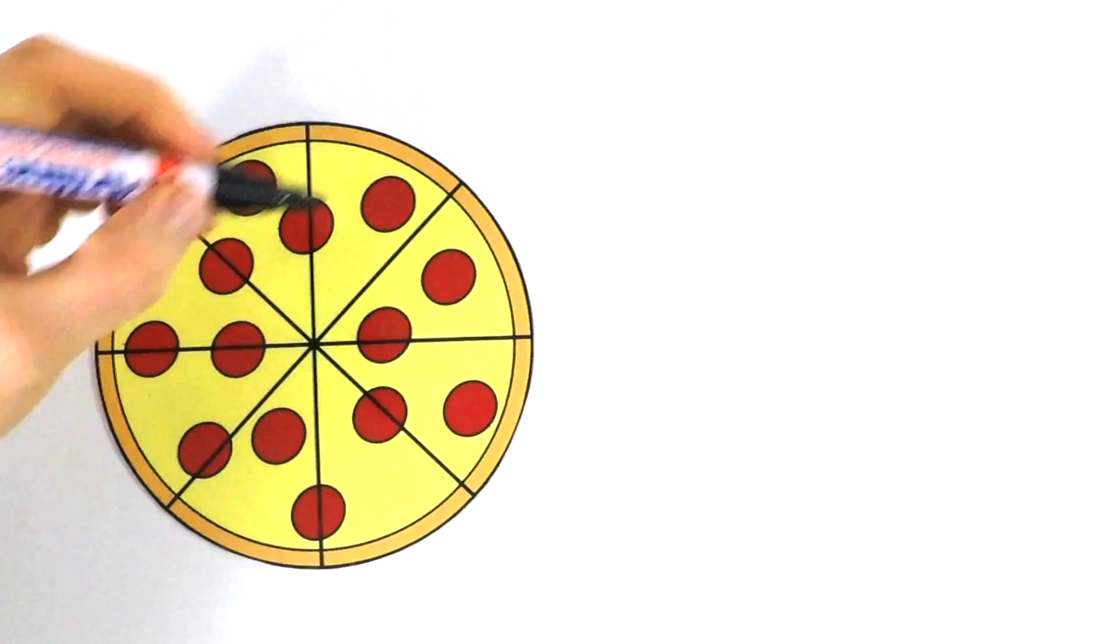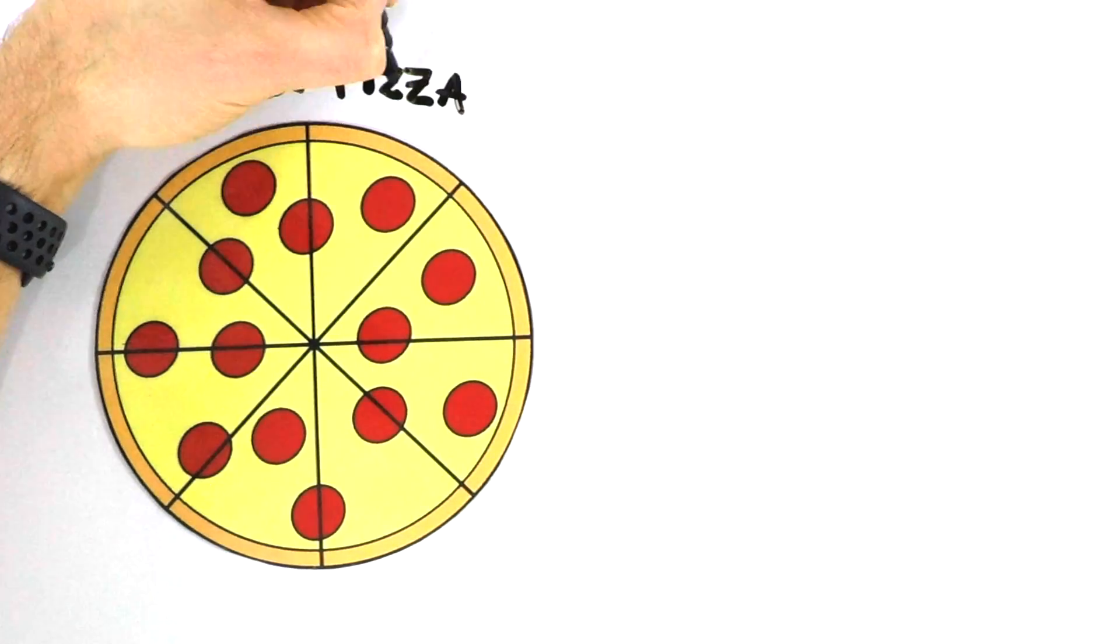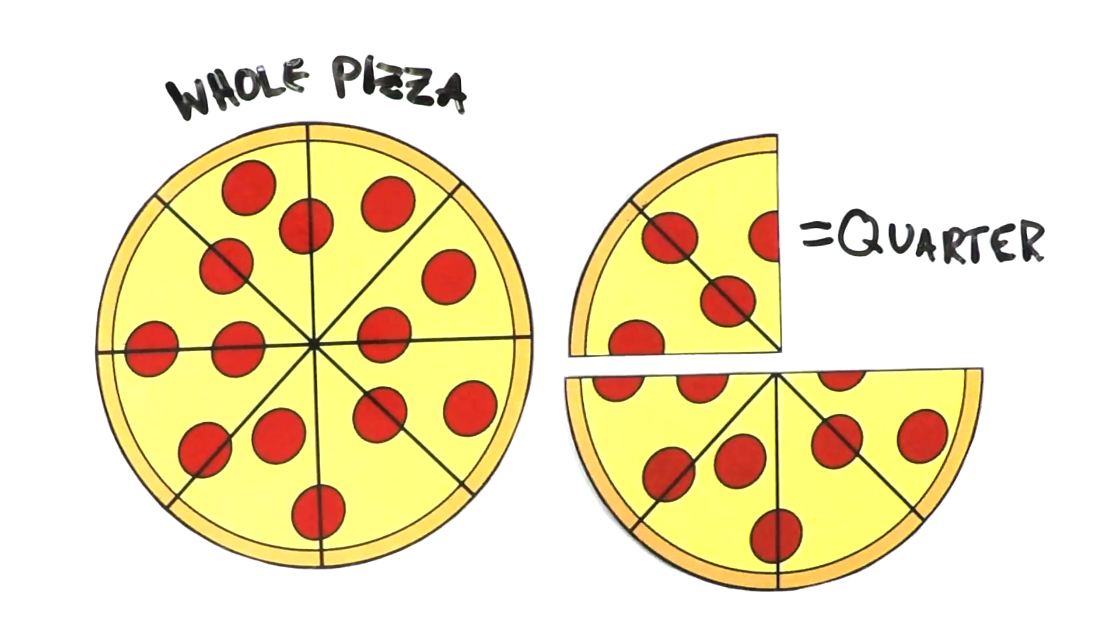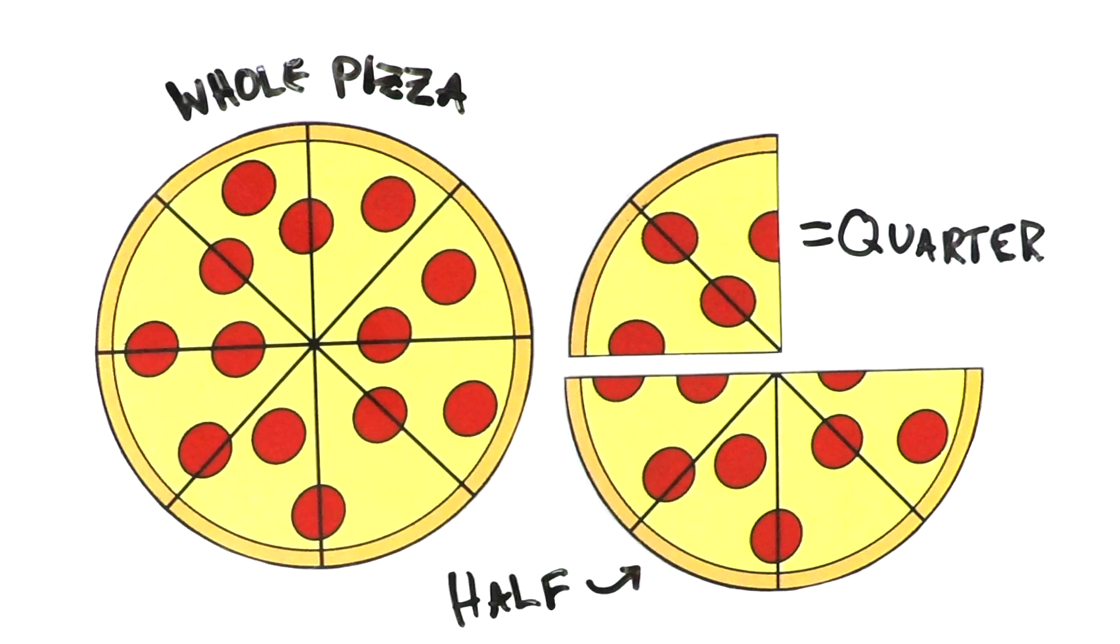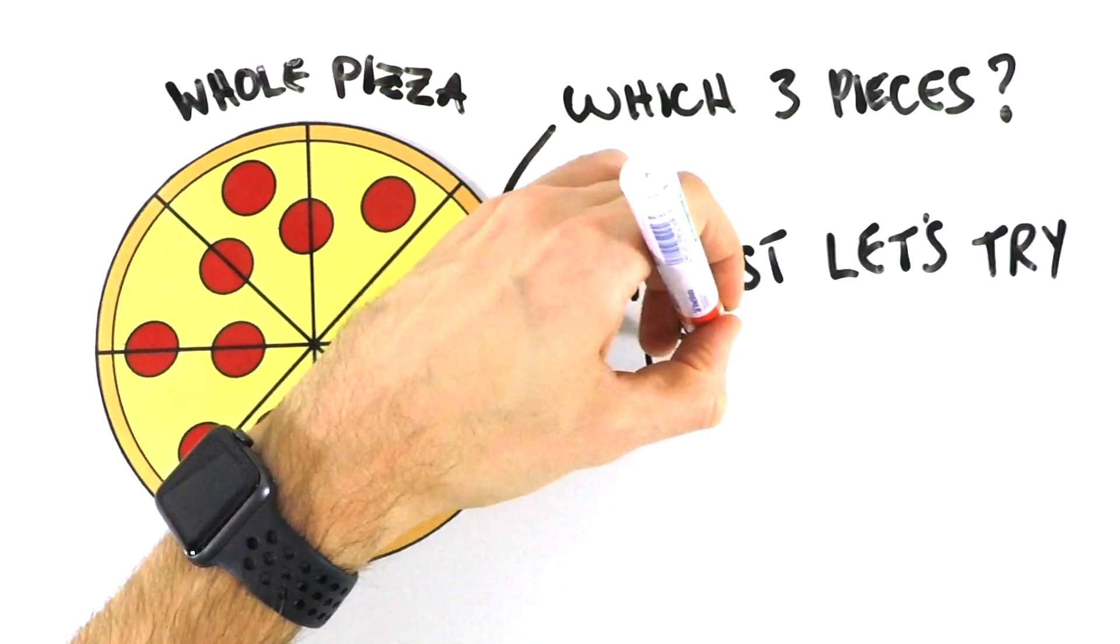So here's our whole pizza and here are the different slices we've already learned, the quarter slice and half slice. So our goal is to find a way to break up this whole pizza into three pieces. So let's start by trying coordinates.